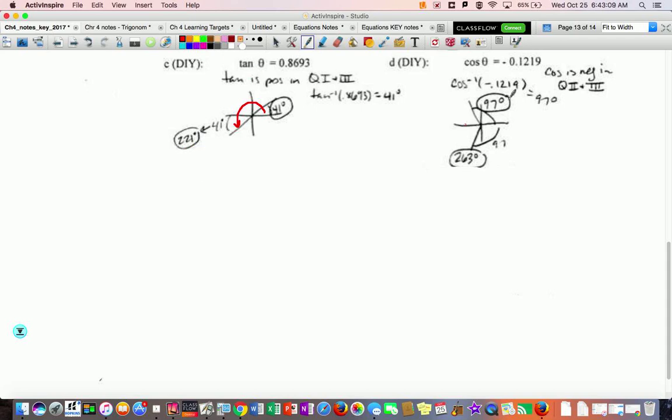Now in the second one, inverse cosine of the negative angle, you end up getting 97 degrees. So 97 degrees from the x-axis puts me into the second quadrant, and that's one of the quadrants where I expected an answer. I also expect one in quadrant three.